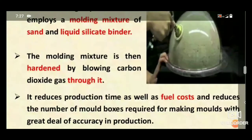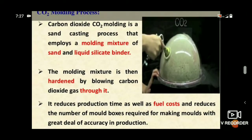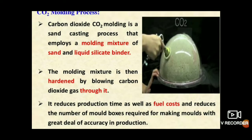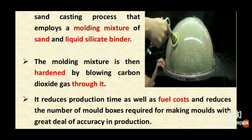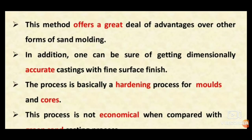The molding mixture is hardened by blowing carbon dioxide gas through a hole. This reduces production time as well as fuel cost, because some sand mixtures are otherwise hardened using heat by burning coal. So fuel costs are reduced in this process. Carbon dioxide is also used to reduce the number of mold boxes required for making molds with a great deal of accuracy in production.